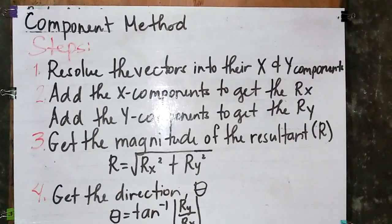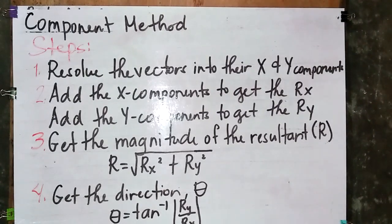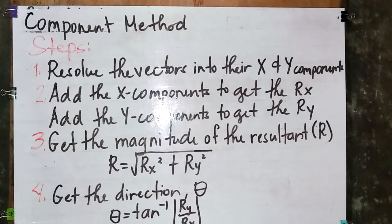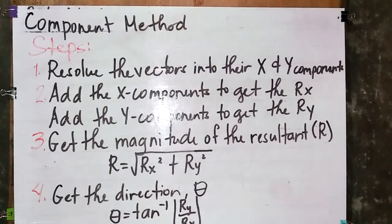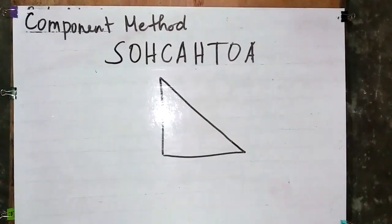To start, here are the steps in the component method. First, we will be resolving the vectors into their x and y components — separating the x component and the y components. After which, we add the x components to get Rx and add the y components to get Ry. Then we get the magnitude of the resultant using the Pythagorean theorem: R equals the square root of Rx squared plus Ry squared. Lastly, we get the direction using theta equals tan inverse of Ry over Rx.